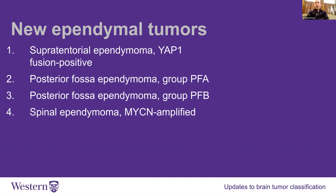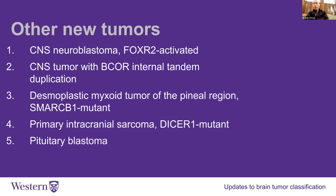Within ependymomas — tumors of the lining on the fluid-filled spaces in the brain — there are a few categories. They all used to just be called ependymomas; now they've been subclassified by their type. They have different behavior and probably respond differently to therapies, and we're trying to learn exactly what that means. Some other new tumors include a type of neuroblastoma and tumors that are cousins of medulloblastomas but happen in the front of the brain. These are very rare; only dozens or handfuls of patients with these have ever been described so far.